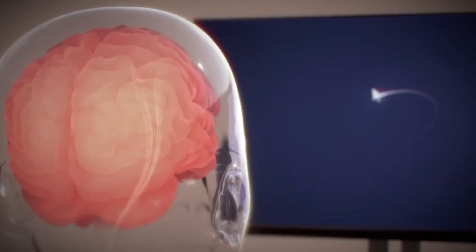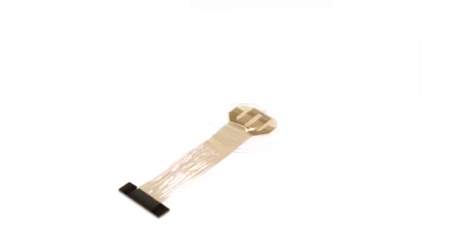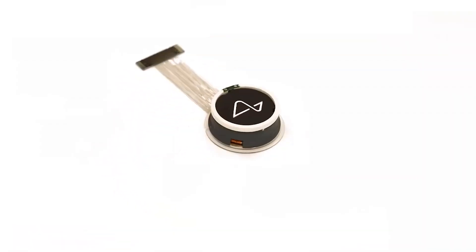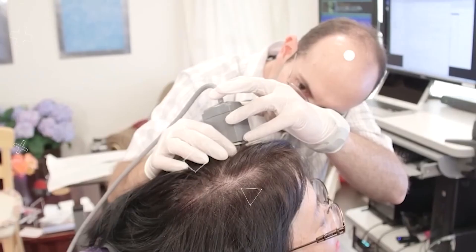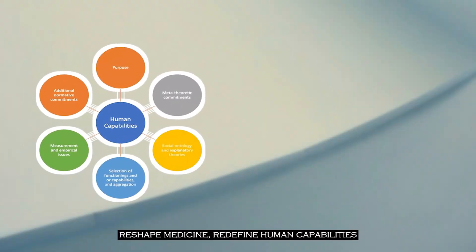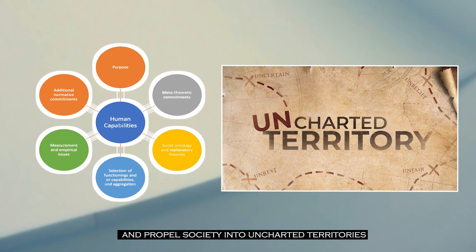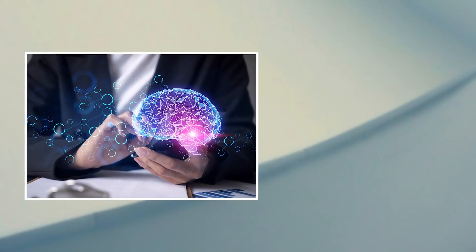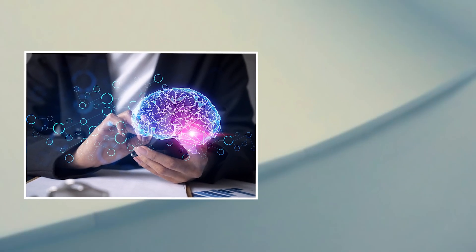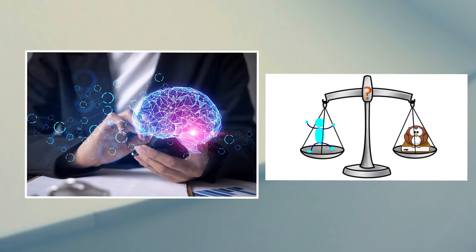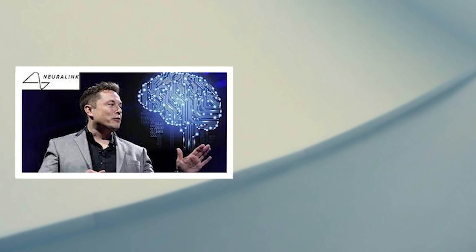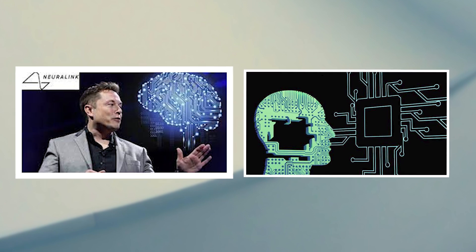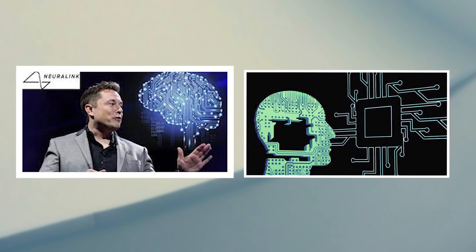Neuralink's launch of the first human trial is a momentous step towards realizing a future where humans and artificial intelligence coexist harmoniously. The outcomes of these trials have the potential to reshape medicine, redefine human capabilities, and propel society into uncharted territories. As we witness the historic endeavor unfold, it is crucial to balance enthusiasm with the thoughtful consideration of the ethical and societal implications, ensuring that the benefits of Neuralink's technology are harnessed responsibly for the betterment of humanity.